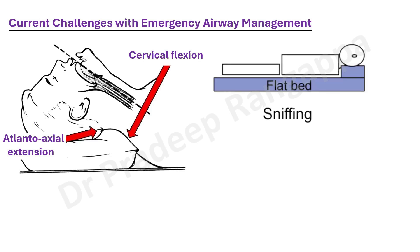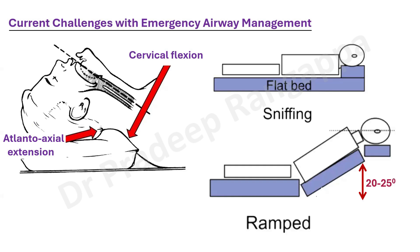In the ramped-up position, the external auditory meatus should be at the level of the suprasternal notch. This position, with the bed head elevated 20–25 degrees, is typically adopted in obese patients with restricted neck mobility and OSA. If you do not achieve neck flexion — if you only extend the neck and head — the larynx moves more anteriorly, making easy intubation more difficult. A pillow or head ring while intubating makes a significant difference.